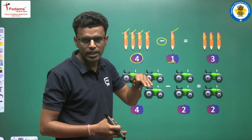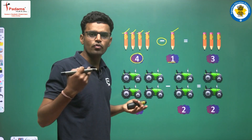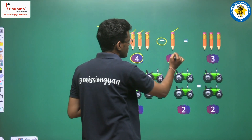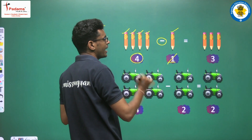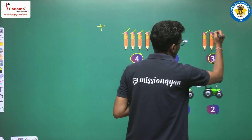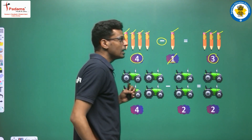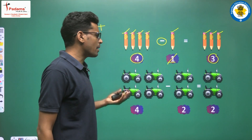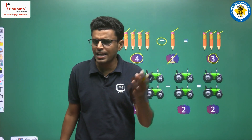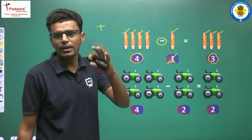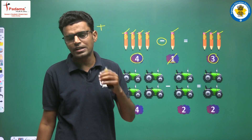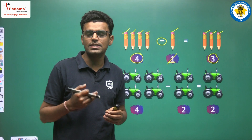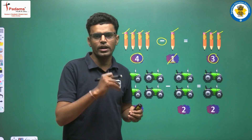Subtraction is making things less, bringing them downside. Addition is moving upward because it combines. So here we can see from four pencils we have lessened one pencil. How many pencils remain? One, two, three — that is our answer. We can do subtraction in many ways: by counting things and removing them, by opening and closing fingers, by drawing lines and cutting them off, or by moving backwards on a number line.